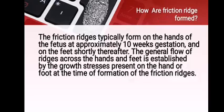How are friction ridges formed? Friction ridges typically form on the hands of the fetus at approximately 10 weeks gestation and on the feet shortly thereafter. The general flow of ridges across the hands and feet is established by the growth stress present on the hand or foot at the time of friction ridge formation.